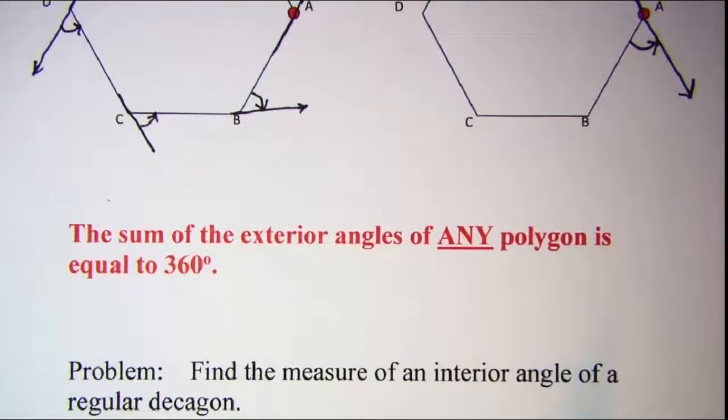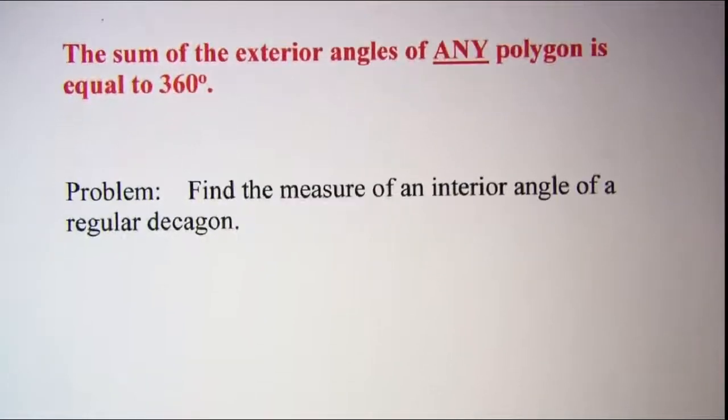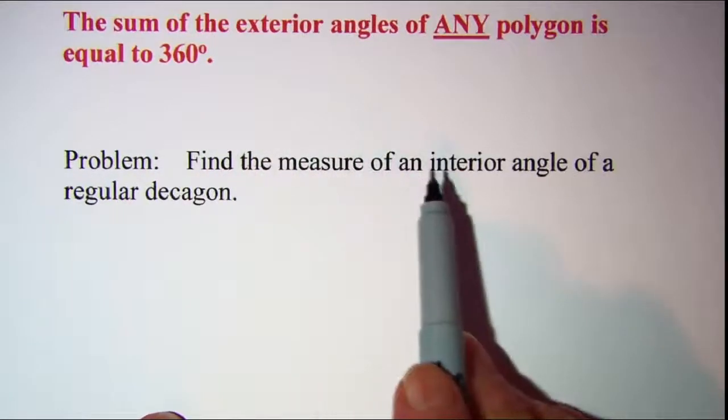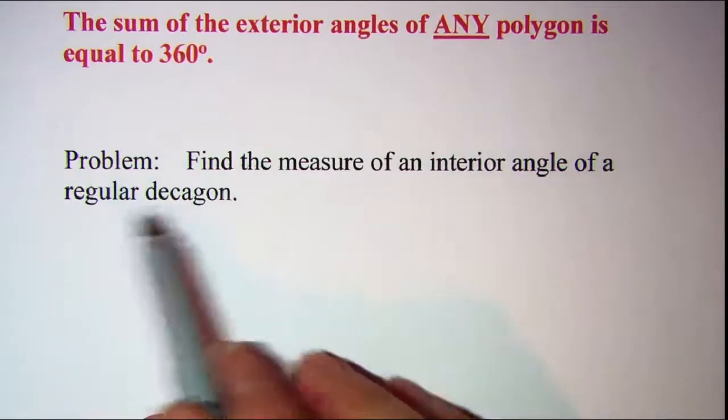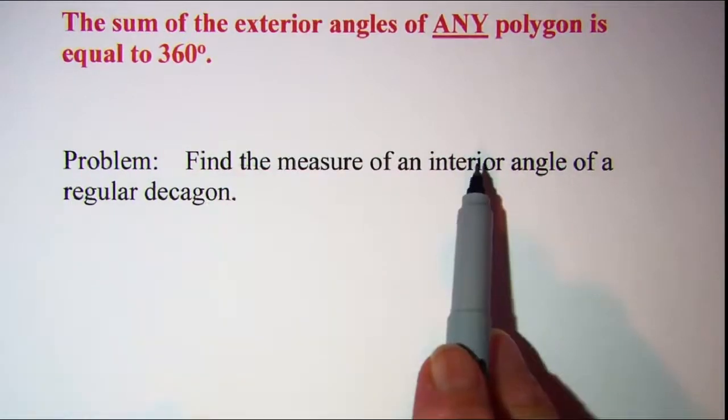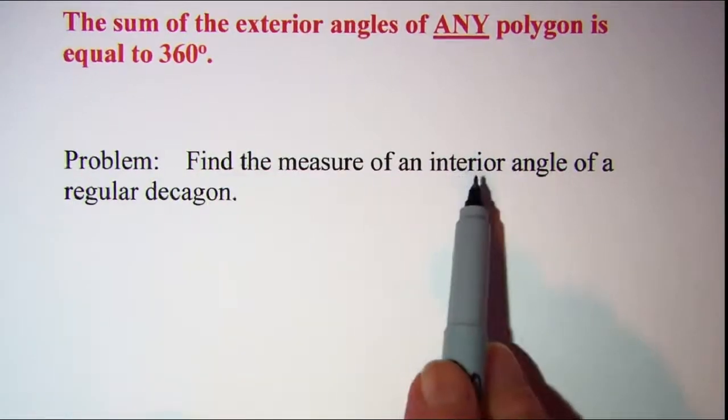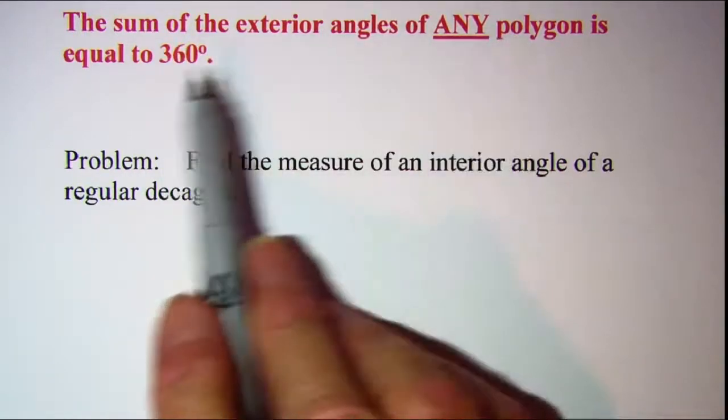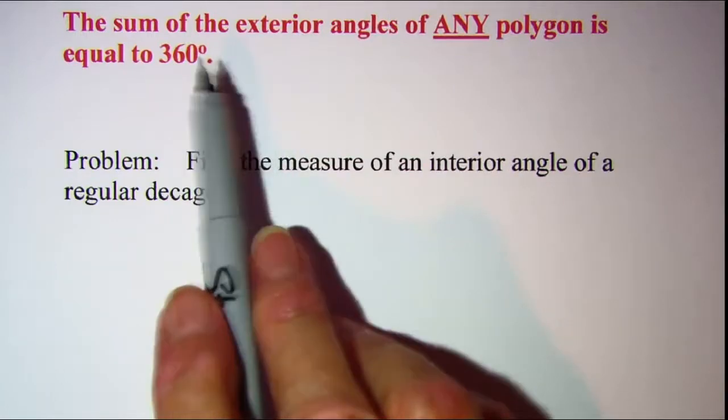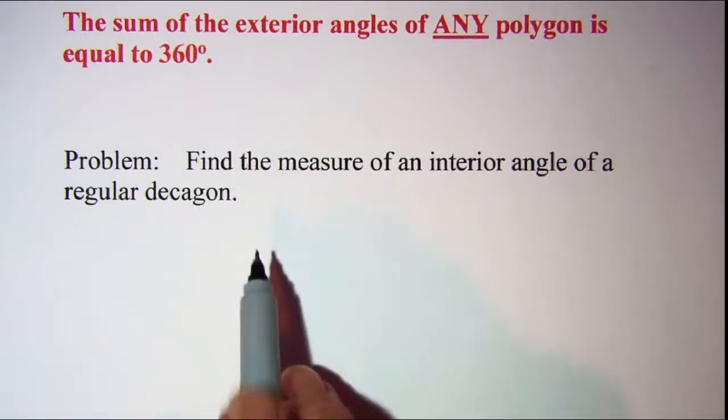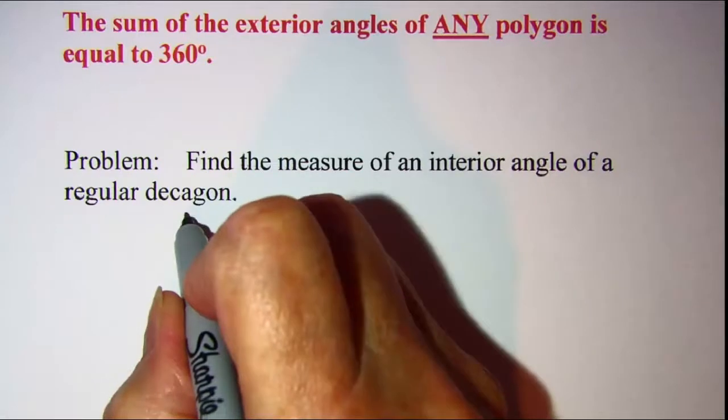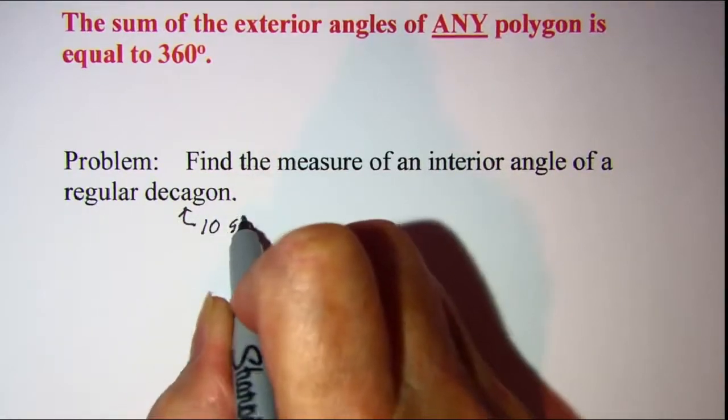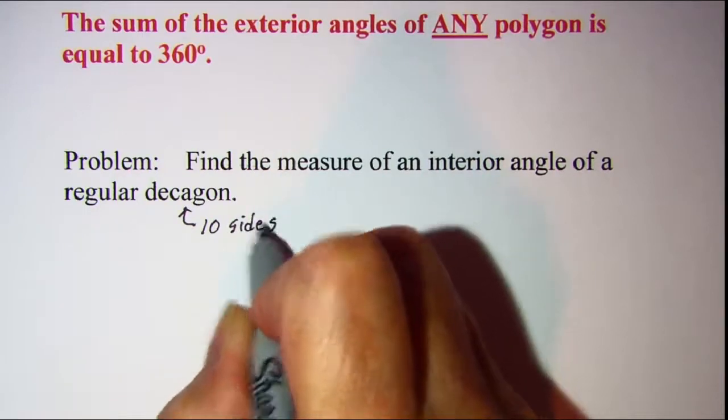This theorem can be used to solve a problem then. Our problem that we'll look at is to find the measure of an interior angle of a regular decagon. There is a formula for finding the measure of an interior angle, but let's use this theorem to also solve it another way. Now if we have a decagon, that means that we have 10 sides and 10 angles.